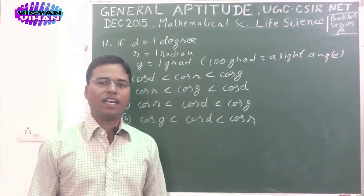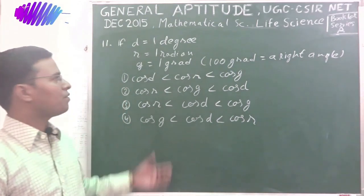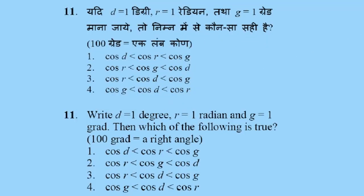Let's start the solution. Here is our first problem of this episode, problem number 11. Write D is equal to 1 degree, R is equal to 1 radian, and G is equal to 1 gradient. Then, which of the following is true?